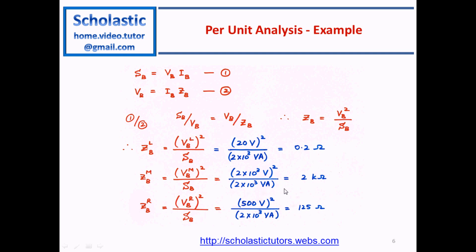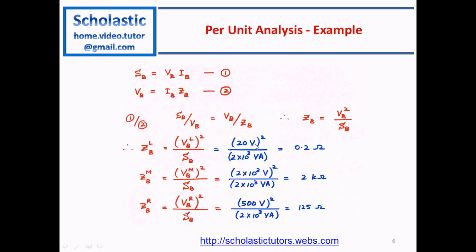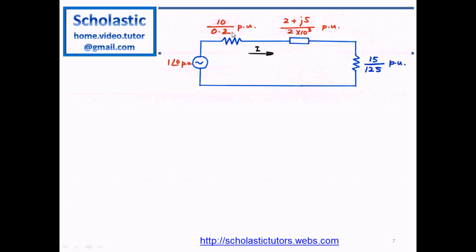The circuit now becomes this — without transformers. We divide the source voltage 120∠0° by the base voltage of 20 volts, giving 1∠0° per unit. Dividing each impedance by its base: 10 ohms divided by ZBL of 0.2 ohms gives 50 per unit; (2+j5) divided by 2 kilo-ohms; and 15 ohms divided by 125 ohms gives the right branch per-unit value.